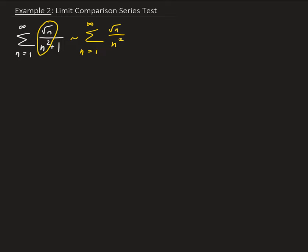And we can break this down, furthermore, algebraically this is the same as we have n to the one half over n squared. So this is the same as the series of one over n to the three halves.